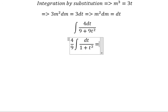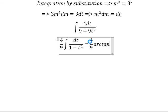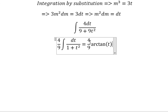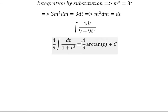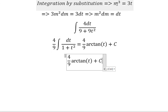And now we can get the answer, that's about 4 over 9 all times arctan of t plus c. For t, we need to change back for m to the power of 3 divided by 3.